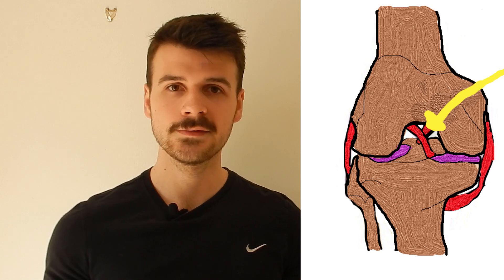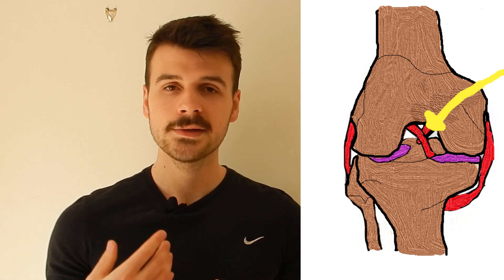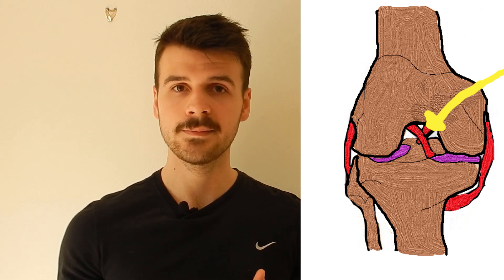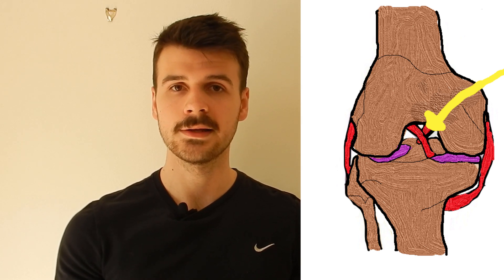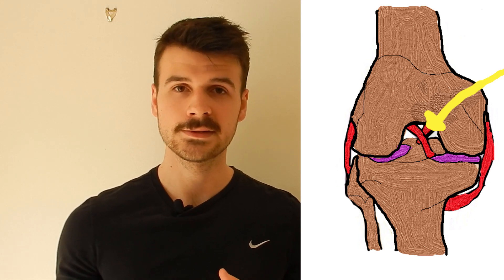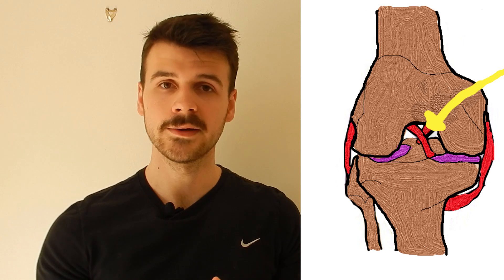It's about 30 to 50% larger than the anterior cruciate ligament. It comes from the posterior tibial sulcus and attaches to the medial condyle on the femur, and it's supplied by the middle genicular artery. Its main role is to stop the posterior dislocation of the tibia on the femur.